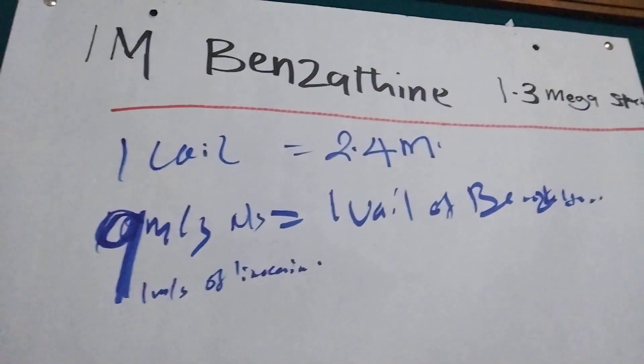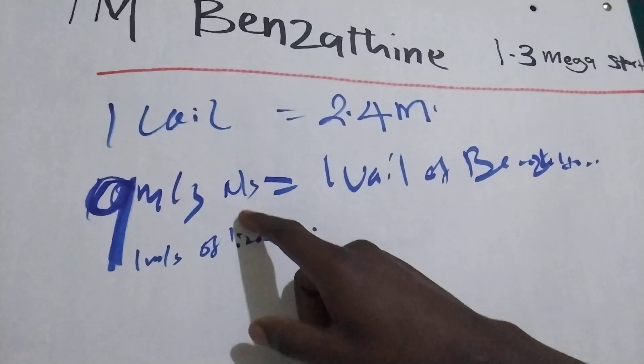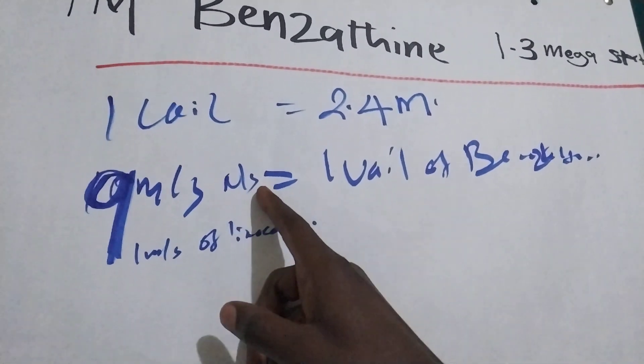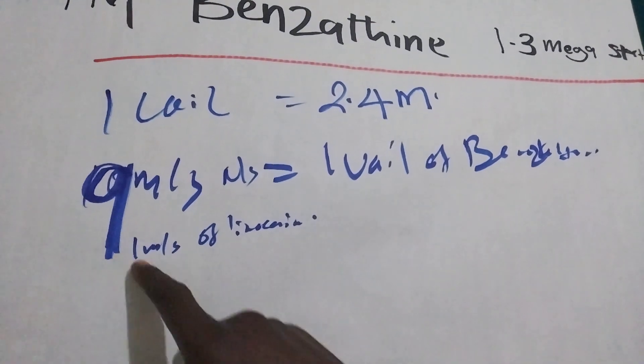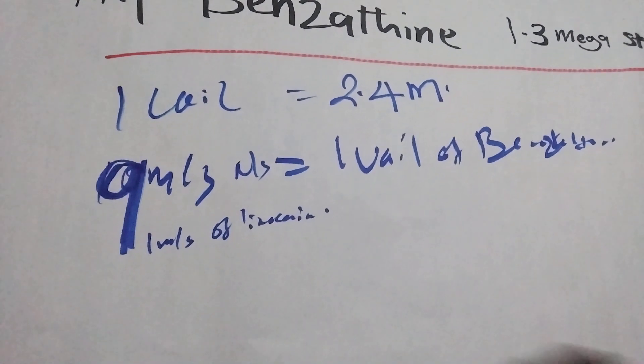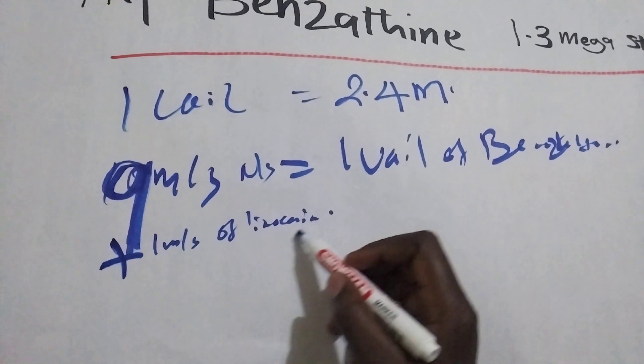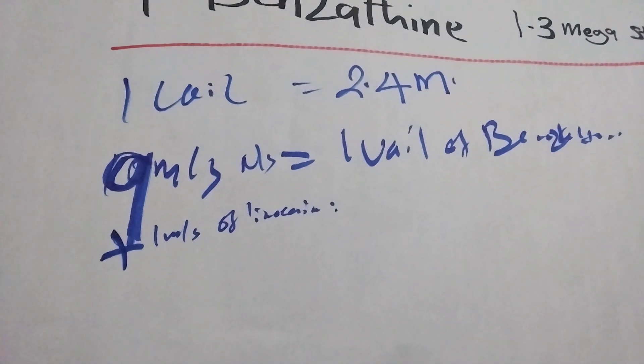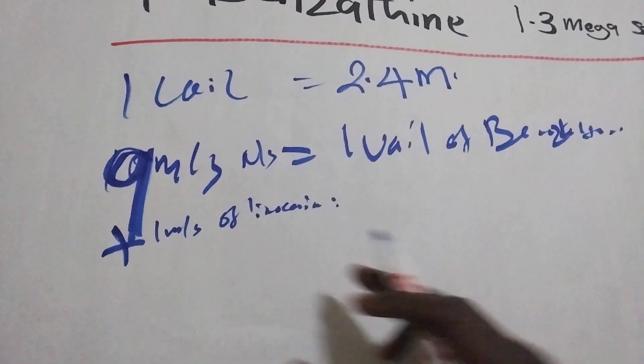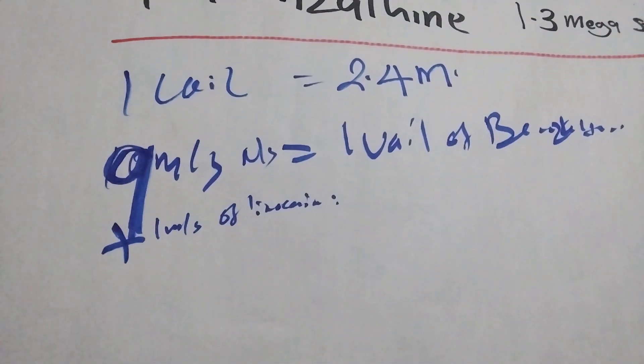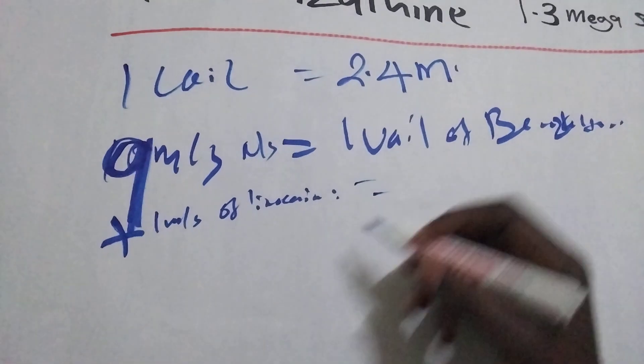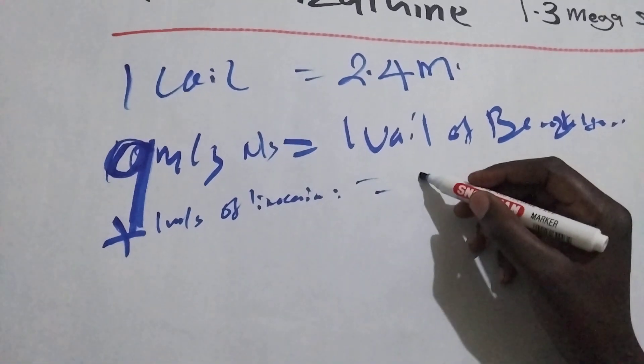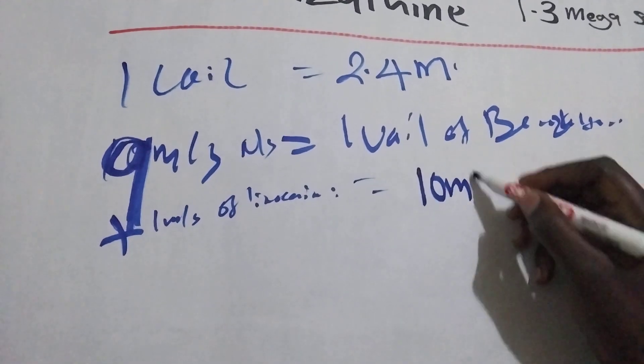So what we are going to do, we are going to use nine mils of normal saline or water for injection to dilute the one vial of benzathine. And then we are going to add one mil of lignocaine because benzathine is painful. So we are going to use lignocaine to reduce the pain. So the total mils will become ten mils.